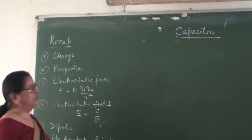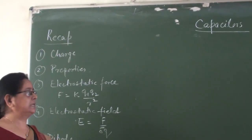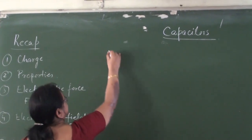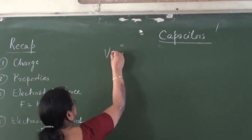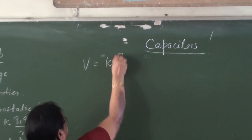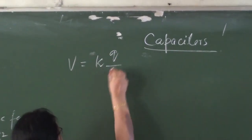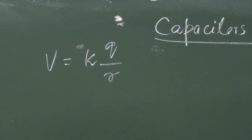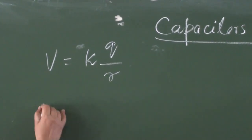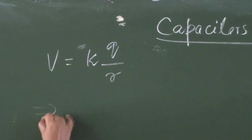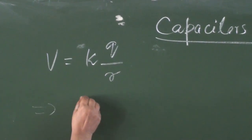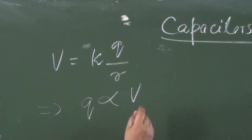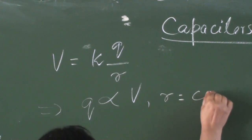So before going to the principle of the capacitor, let me again consider the potential due to a point charge, which is expressed as KQ by R. Now, if I keep R constant, then we get Q is proportional to V when R is constant.